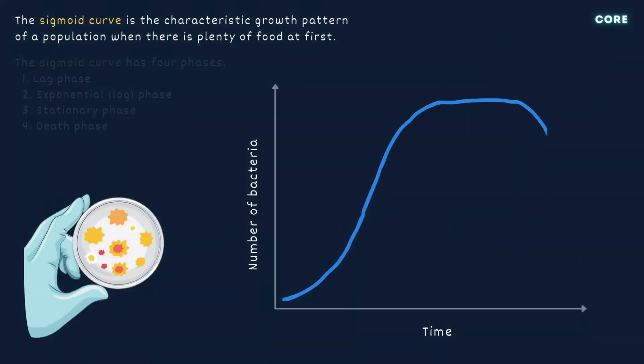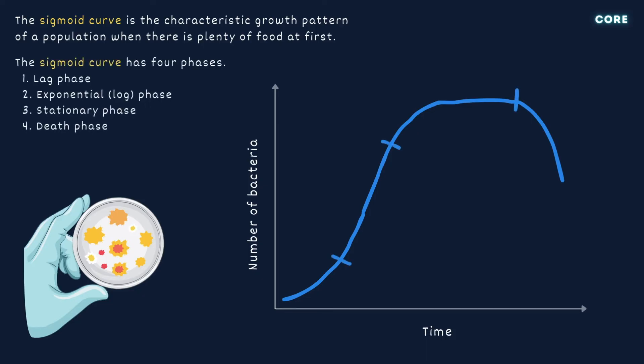You need to identify the different phases in the sigmoid curve of population growth. The sigmoid curve, also known as an S-shaped curve, depicts the growth of a population of a species in an environment with limited resources — for example, bacteria on a petri dish or yeast cells in a sugar solution. There are four phases: a period of slow growth called the lag phase; a period of rapid growth called the exponential or log phase; then the stationary phase, where the size of the population remains constant; and finally the death phase, where population numbers fall.